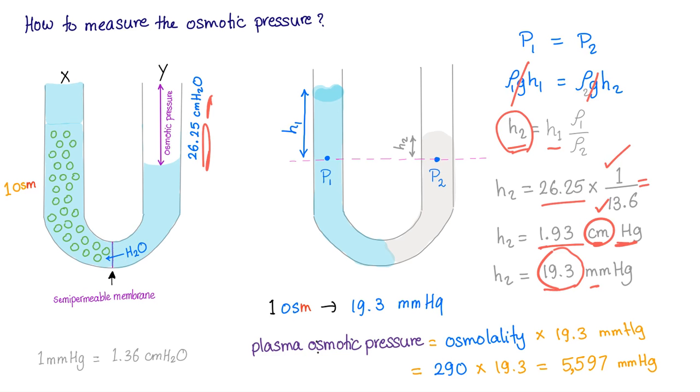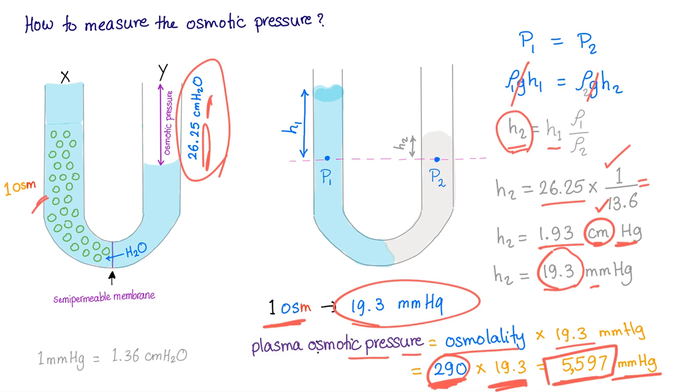So, the moral of this story is, if we say that one osmol causes a height of water by 26 centimeter water, then one osmol causes an osmotic pressure of 19.3 millimeter mercury. So, the plasma osmotic pressure equals osmolality times 19.3. 290 times 19.3, you have this, around 5500 millimeter mercury. This is the plasma osmotic pressure in millimeter mercury. If you want it in milliosmols per liter, easy, it's 290. No one ever in history is going to explain it to you like this. I know I'm a very humble person.